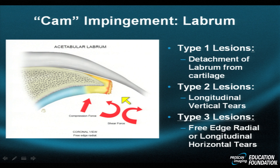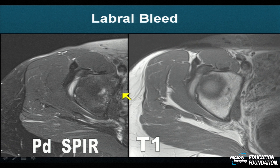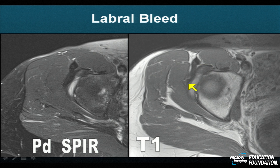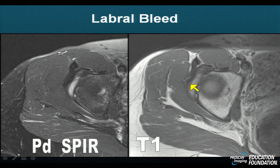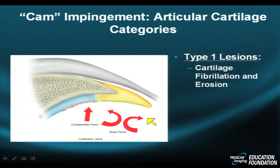In type 3 lesions, the tip of the labrum is truncated or lost — the so-called free edge or radial tear. Here's an example of a patient who was using kettlebells for exercise and has amputated the free edge of the labrum, now replaced by a large collection of blood. The entire labrum from anterior to posterior is represented by T1 hyperintense signal abnormality, with perhaps a little labrum remaining anteriorly.